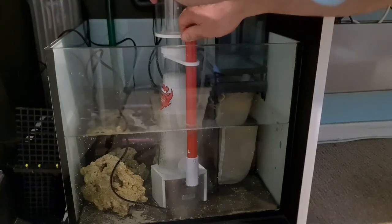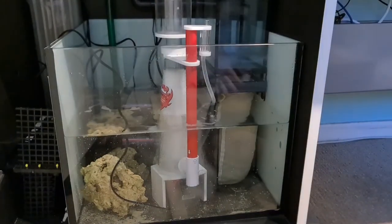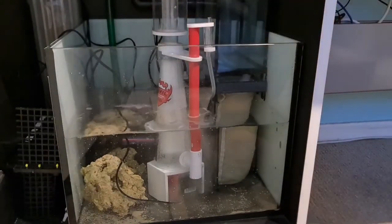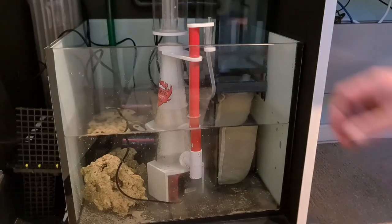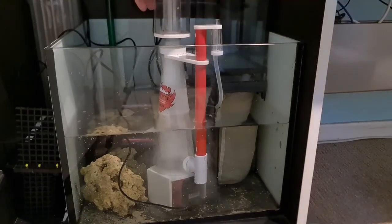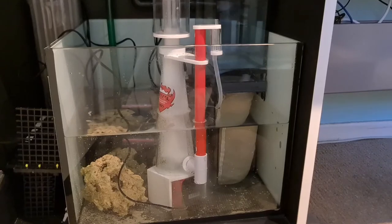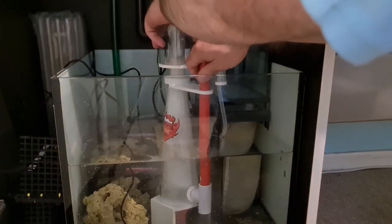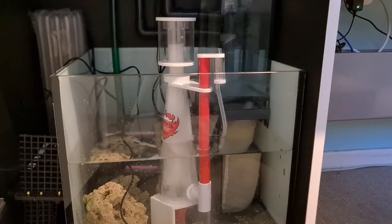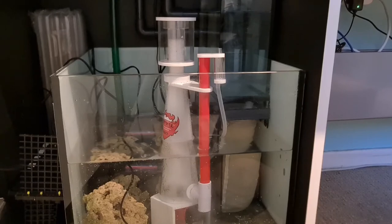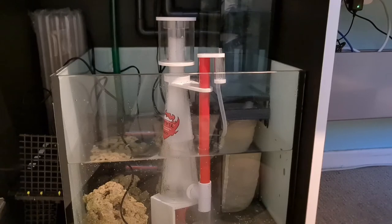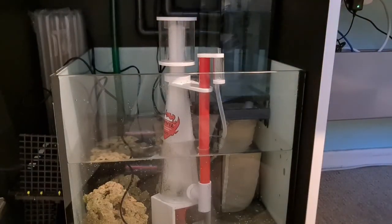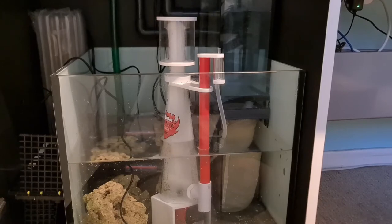A little bit further. You can start to see the bubbles now rising up into the skimmer neck. It might just need a little bit more adjustment. Obviously this is the first time it's running. I'm expecting it to take a while to bed in. Seems to be doing the job straight away. Now I'm starting to see bubbles come over. Probably that's a bit of a wet skim.